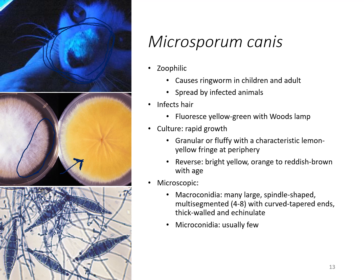With the microscopic appearance, the macroconidia are many very large spindle shapes — you can see how they get narrow and tapered at the ends, sometimes with a little curved end. The wall is a little bit thicker than Trichophyton, so you can actually see that wall versus the trichophytons where they were a little thinner. There are four to eight septa — you can see larger septa divisions in the center getting smaller toward the tapered ends. Microconidia are usually very few.